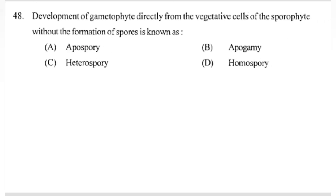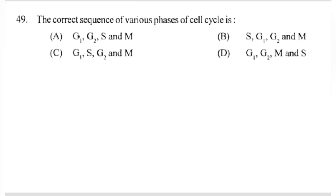Development of gametophyte directly from the vegetative cells of the sporophyte without formation of spores is known as — answer A part: apospory. The correct sequence of various phases of cell cycle is — answer C part: G1 phase, S phase, G2 phase, M phase.